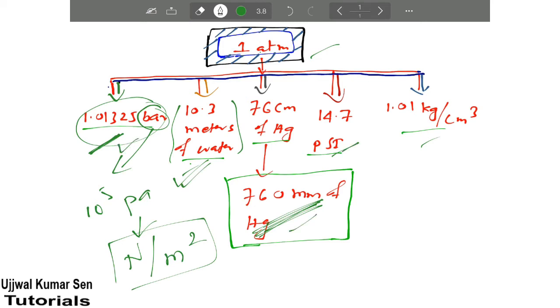Now what is next? 76 centimeter of Hg, that is also known as 760 mm of Hg. Most of the time we have used this one. Hg means mercury.